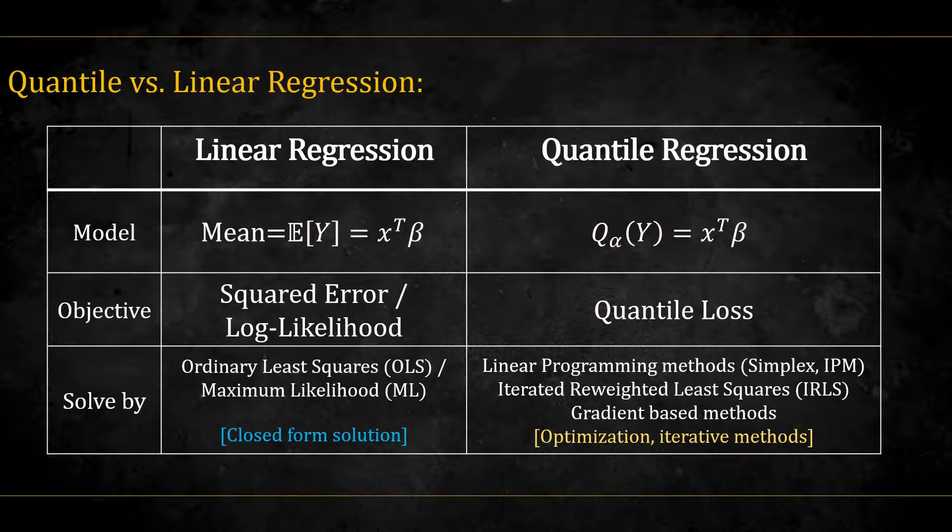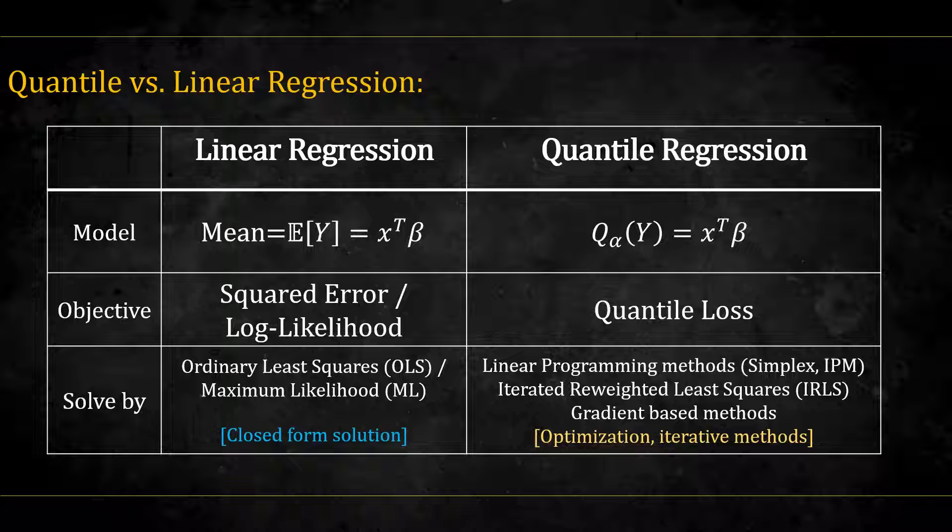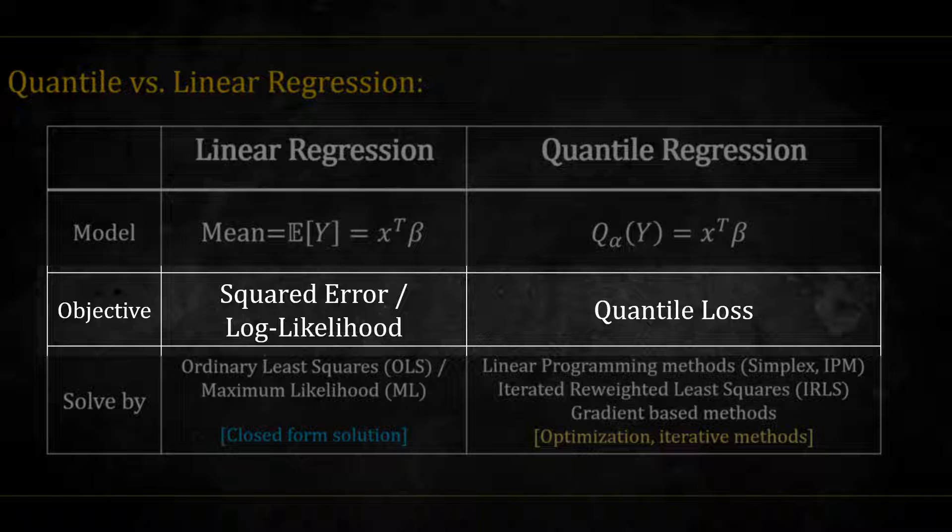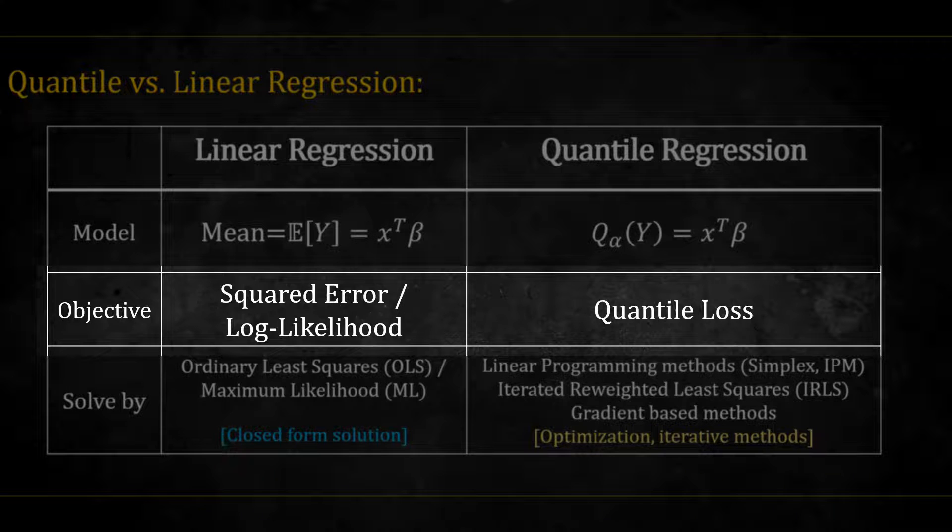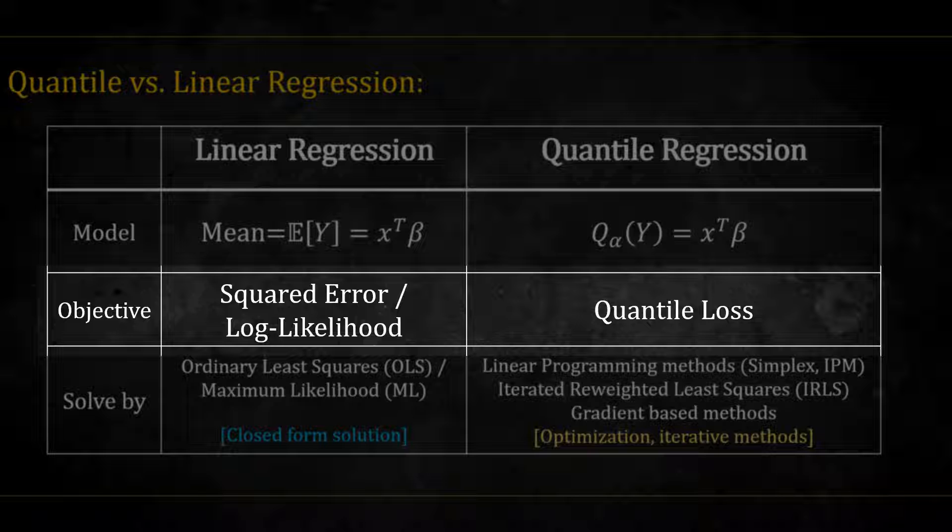In the last video, we talked about the difference between linear and quantile regression, and we mentioned that one of the differences is the objective function being optimized. While linear regression optimizes the squared error, or the log likelihood, quantile regression has its own unique loss, called the quantile loss.